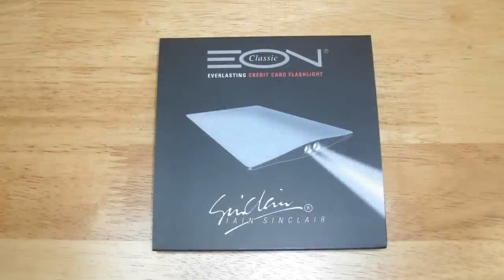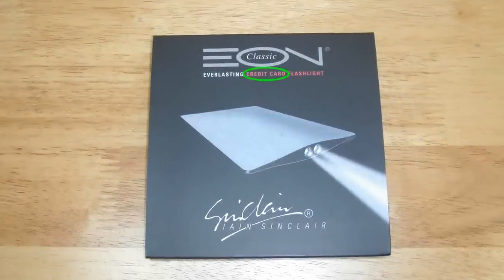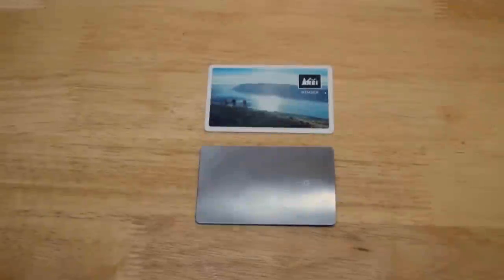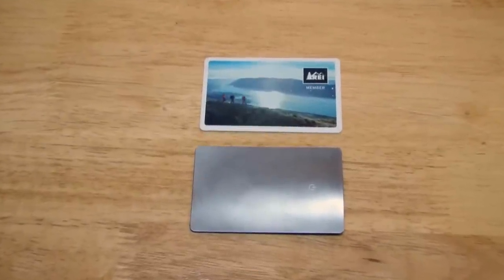Much like their excellent product, the Card Sharp Knife, the EON Classic is billed as a credit card sized gadget. Here's the EON compared to my REI membership card, which is the same size as a normal credit card.